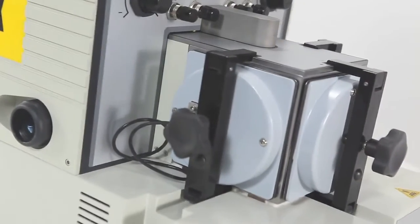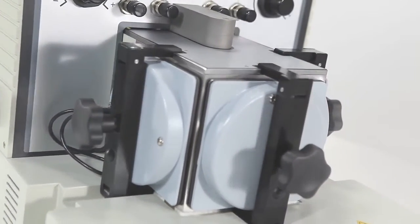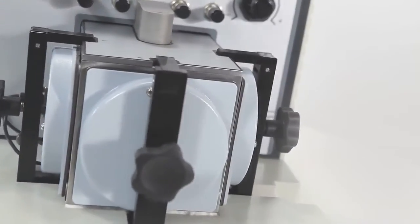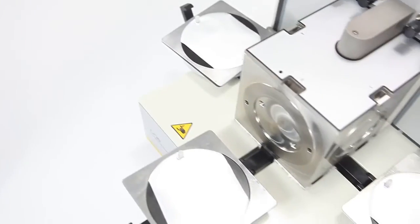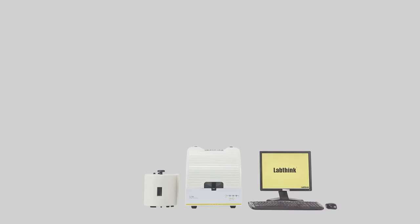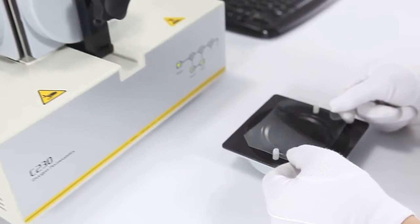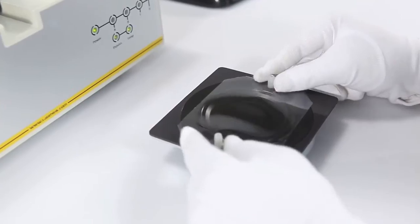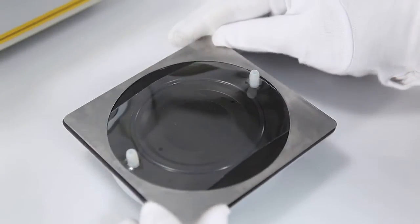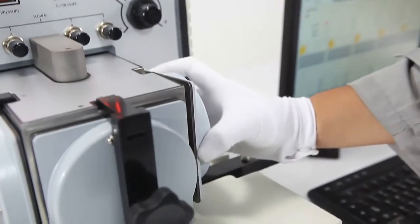C230 has three independent test cells which can test three same or different specimens simultaneously. According to standards, the instrument can be connected with multiple satellite instruments so that more specimens can be tested simultaneously. Reference films are available for system calibration, which guarantees the accuracy and universality of test data.